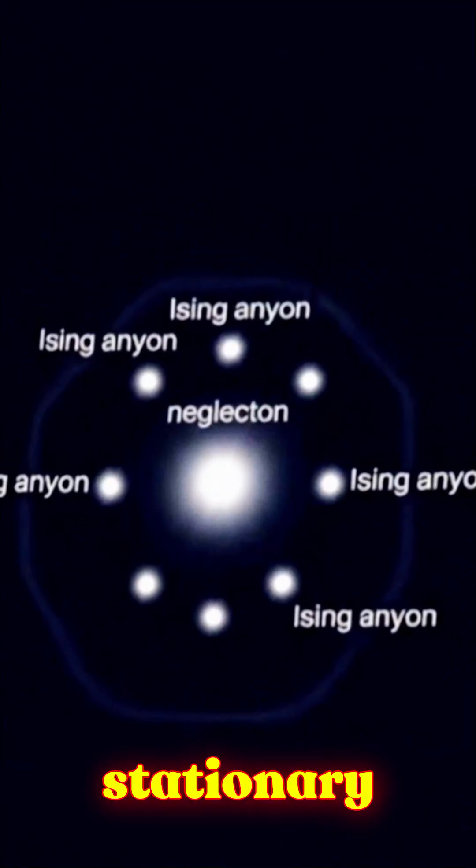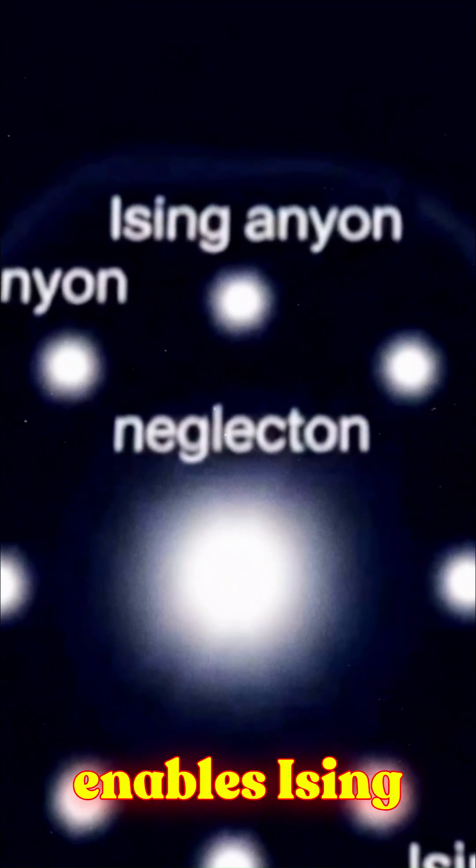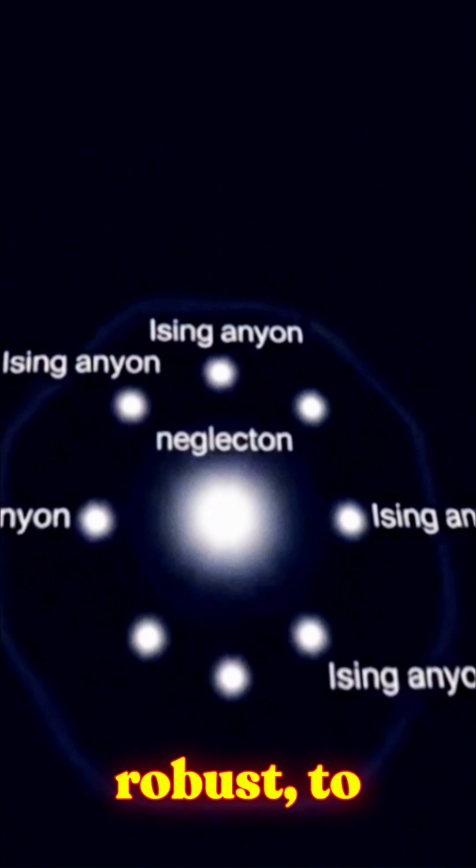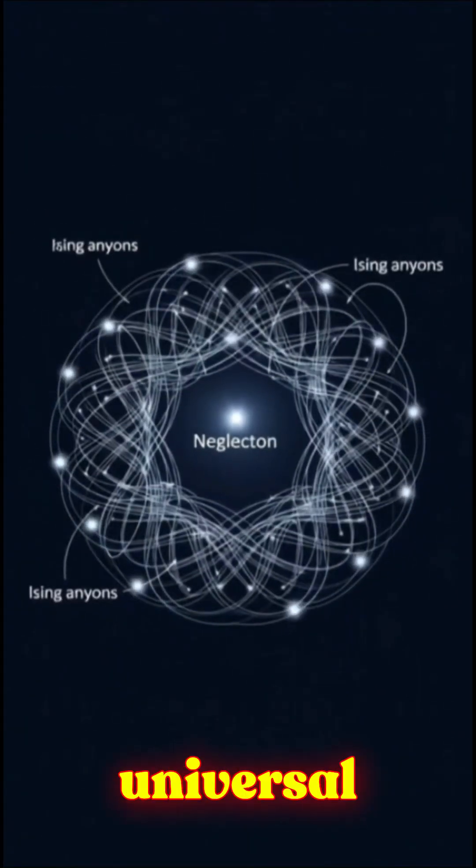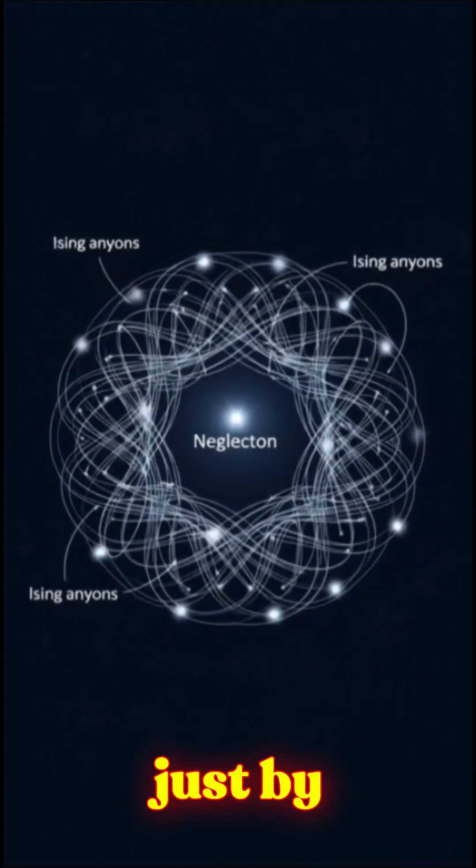Adding a single stationary neglectan enables Ising-Anions, already robust, to perform universal quantum computation just by braiding.